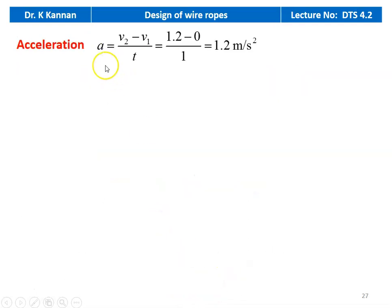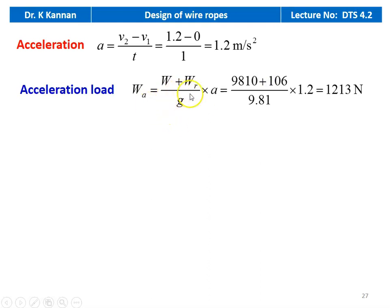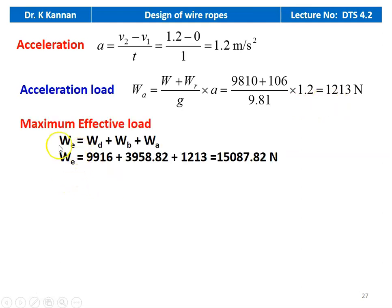We calculate the acceleration: final velocity V2 is 1.2 meters per second, initial velocity is 0, and time is 1 second, so acceleration is 1.2 meters per second squared. The acceleration load W_A equal to (W plus W_R) divided by G into a, so (9810 plus 106) divided by 9.81 into 1.2 equal to 1213 newton. The effective load is the sum of direct load plus bending load plus acceleration load: 9916 plus 3958.82 plus 1213 equal to 15,087.82 newton.